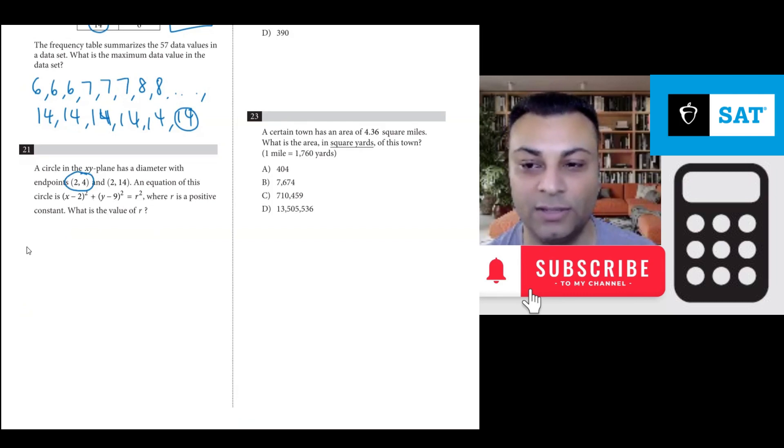So we would have 2 for the x. Here's what I'm going to do. We're going to plug in 2 for x and 4 for y into the equation: (x-2)² + (y-9)² = r². That takes care of substituting these values. We still have the -2 here and the -9 here.